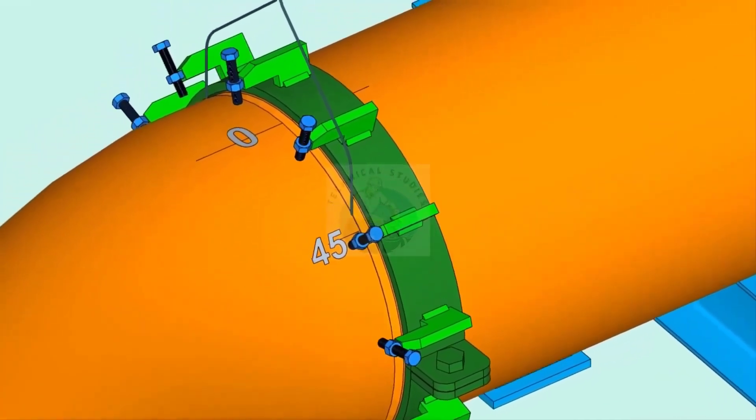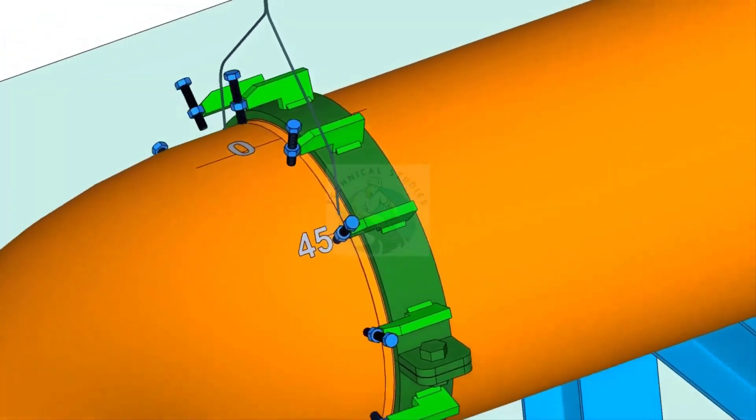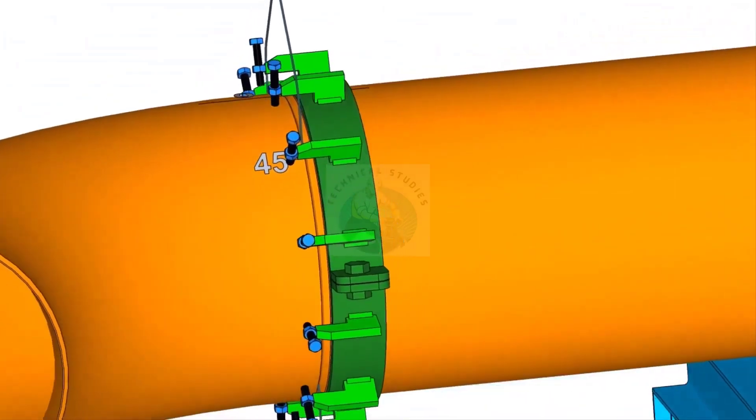Put the gap rod in the joint. Now slowly rotate the elbow until the 45 degree mark comes opposite to the 0 mark on the pipe.